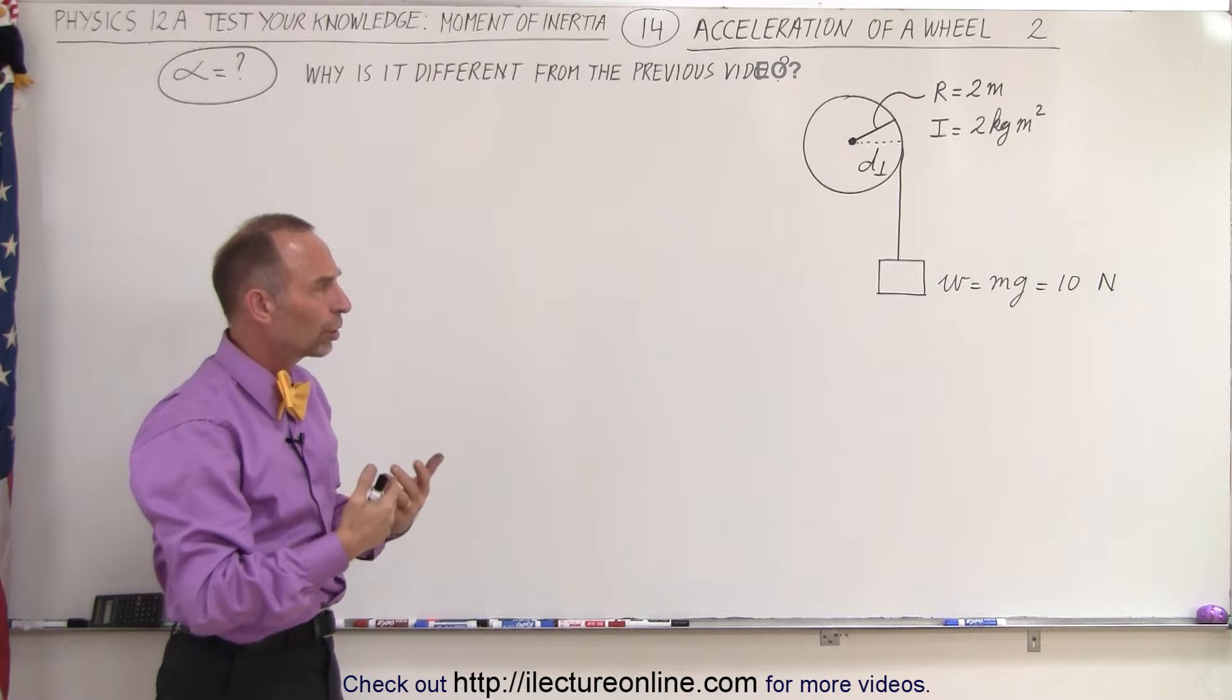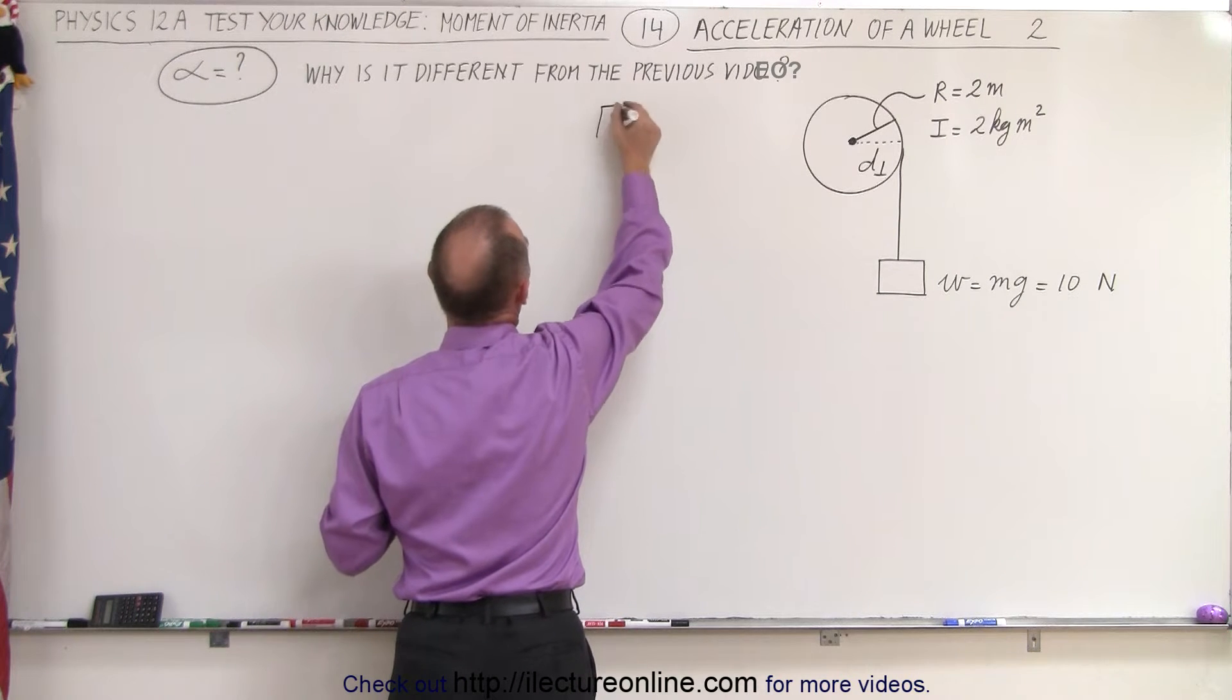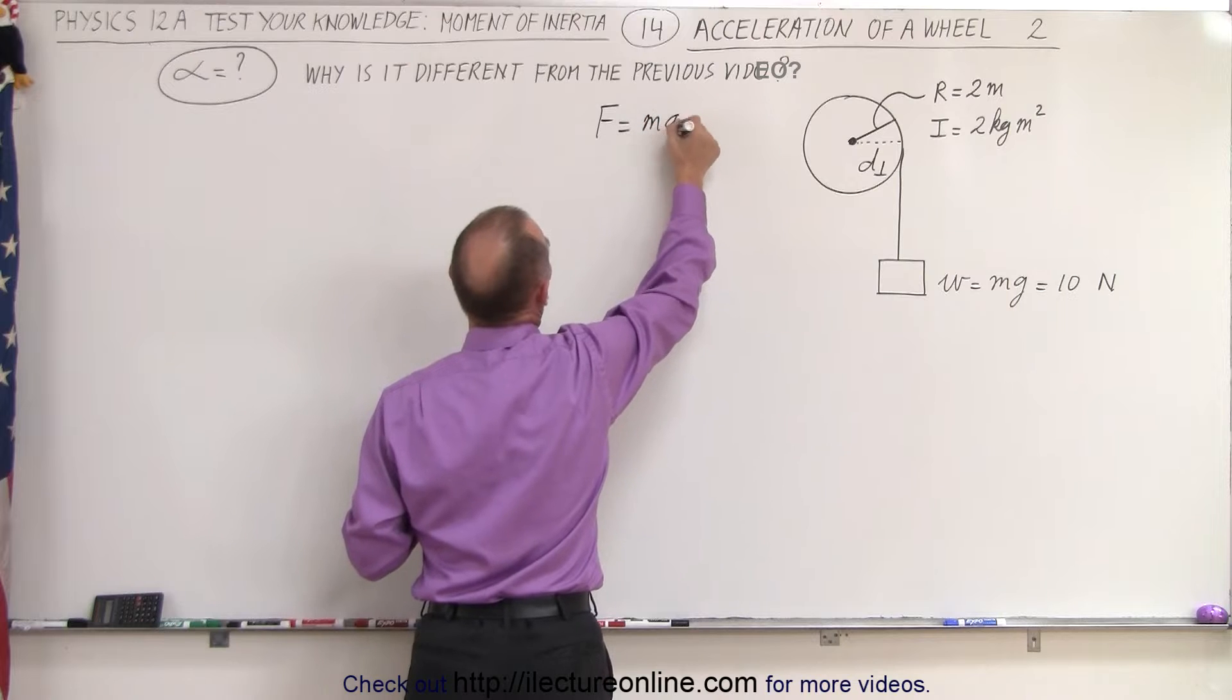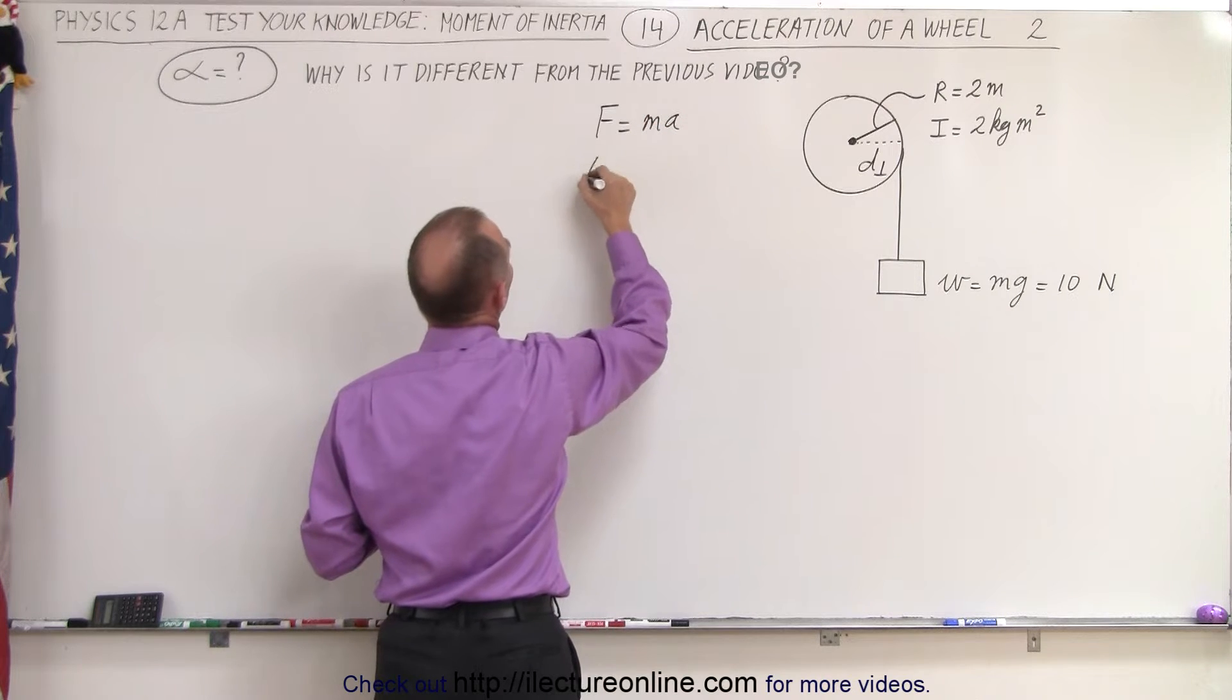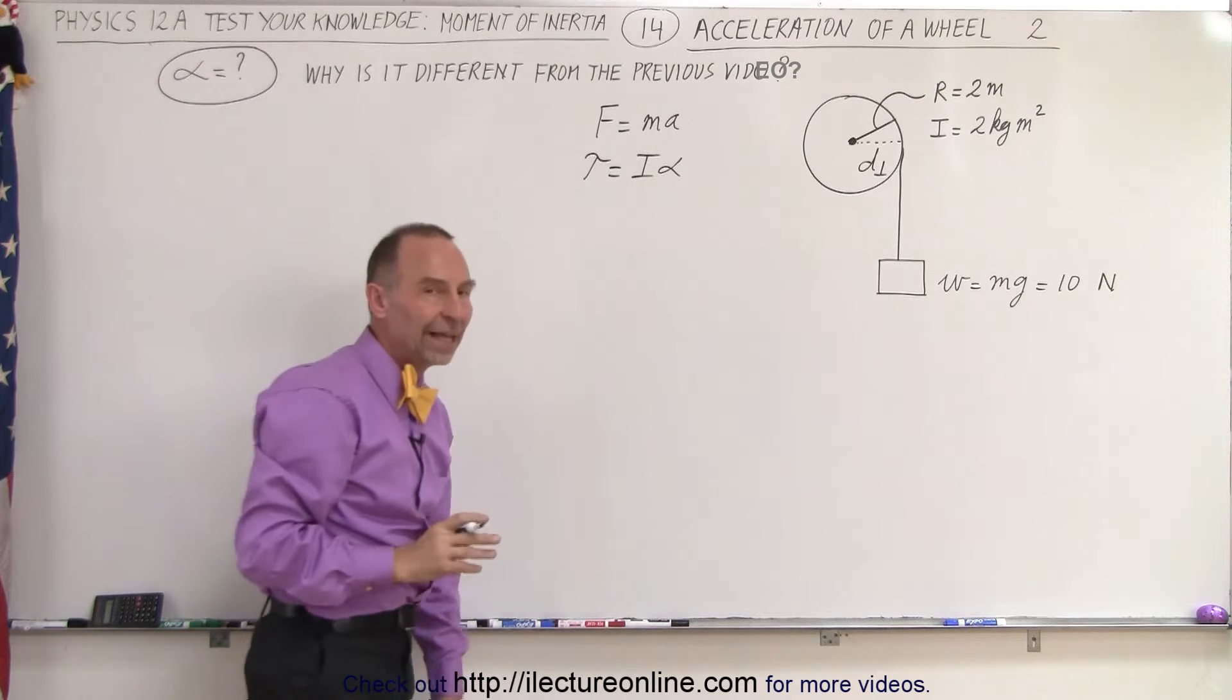So we have to work it as follows. We have to start with the equation F equals MA, which of course is for linear motion, then we convert to torque equals I alpha for rotational motion.